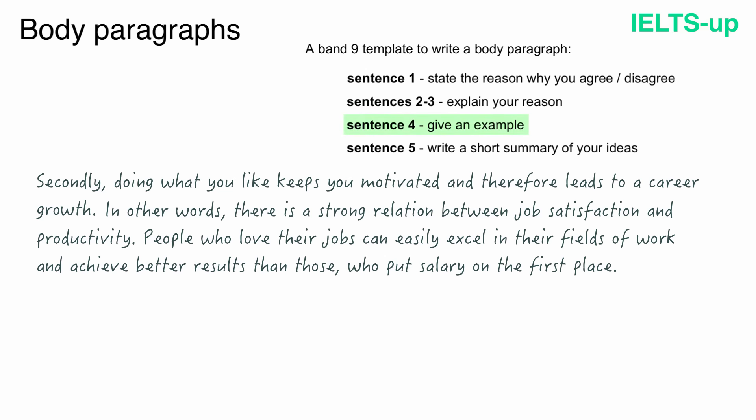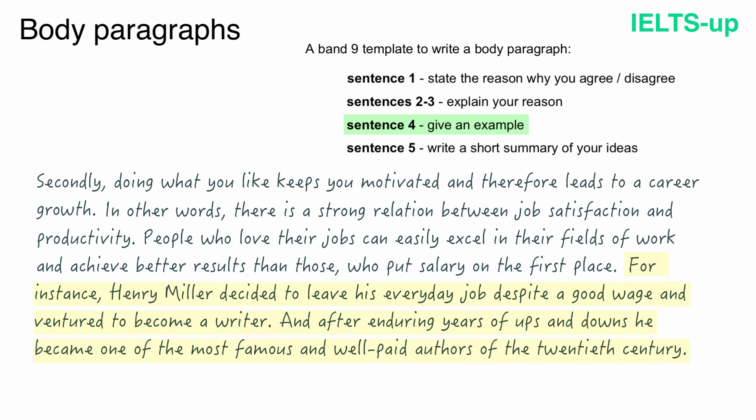Then we write sentence four to support the idea with an example. I decided to use an example of American writer Henry Miller. 'For instance, Henry Miller decided to leave his everyday job despite a good wage and venture to become a writer. And after enduring years of ups and downs, he became one of the most famous and well-paid authors of the 20th century.'